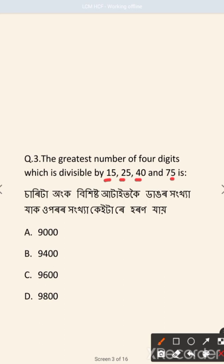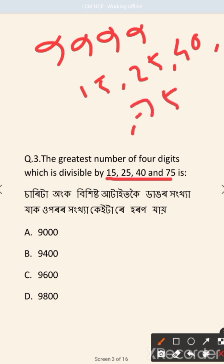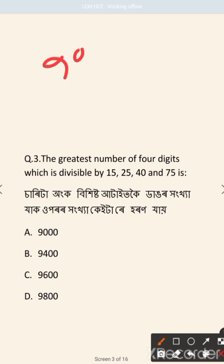The greatest number of four digits is 9999. We will find the LCM of 15, 25, 40, and 75, which gives us 600. So we take 600 from 9999.